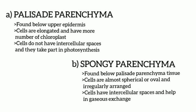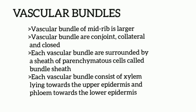Next we have spongy parenchyma. Spongy parenchyma is found below the palisade parenchyma tissue. Cells are almost spherical, oval, or irregularly arranged. Cells have intercellular spaces and help in gaseous exchange. Next, vascular bundle: the vascular bundle of the midrib is larger. Vascular bundles are conjoint, collateral, and closed. Each vascular bundle is surrounded by a sheet of parenchyma cells called bundle sheath. Each vascular bundle consists of xylem lying towards the upper epidermis and phloem towards the lower epidermis.